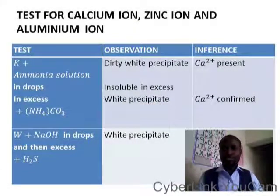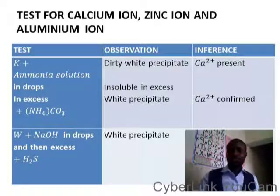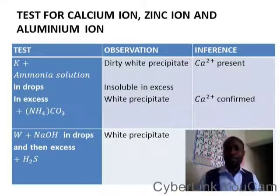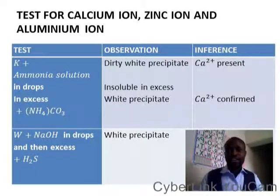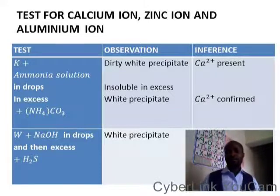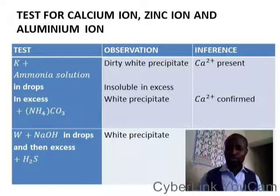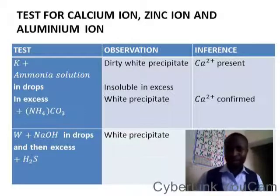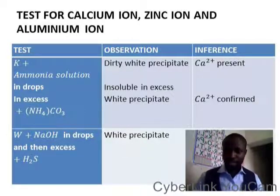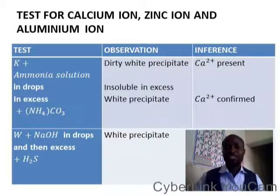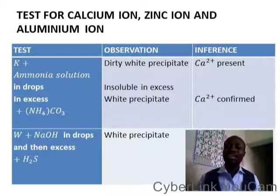The test for cations continues — we will be testing for calcium ion, zinc ion, and aluminium ion. K represents a sample plus ammonia solution in drops. If we have a dirty white precipitate, from the previous video you know that it is calcium ion, Ca²⁺.